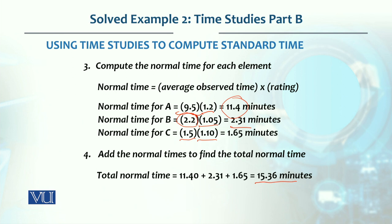The total normal time is the sum of all three elements' normal times: 11.4 plus 2.31 plus 1.65 gives us 15.36 minutes. This is the total normal time for a letter to be typed, envelope addressed, stuffed, and sorted.